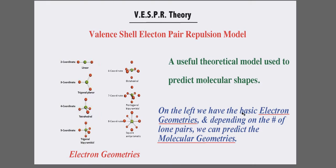So from the electron geometries, depending on the number of lone pairs, we can predict the molecular geometries. The number of domains or coordinates in red will give you the electron geometry, and then when we start adding the lone pairs, that will give you the molecular geometry.